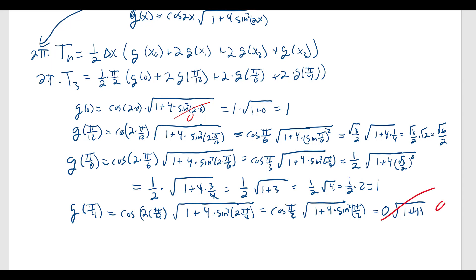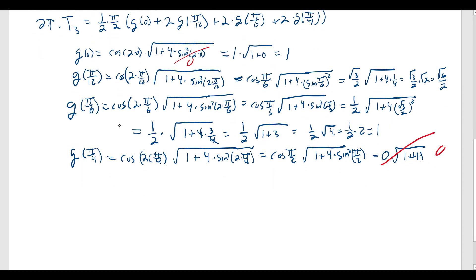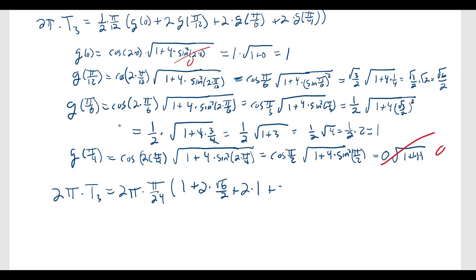Putting it all together: 2 pi times T₃, which is 2 pi times one half times pi over 12 — that's pi over 24 — times g(0) plus 2·g(pi over 12) plus 2·g(pi over 6) plus g(pi over 4), which is 1 plus 2 times root 6 over 2 plus 2 times 1 plus 0. Putting that in the calculator gives approximately 4.4820.